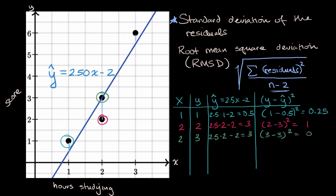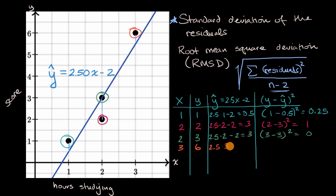Last but not least, when x is three, this person studied three hours and got a six on the test, so y equals six. Our estimate from the regression line — what you would have expected to get — is 2.5 times three minus two, which equals 5.5. So our residual squared is (6 minus 5.5) squared, which is 0.5 squared, equal to 0.25.